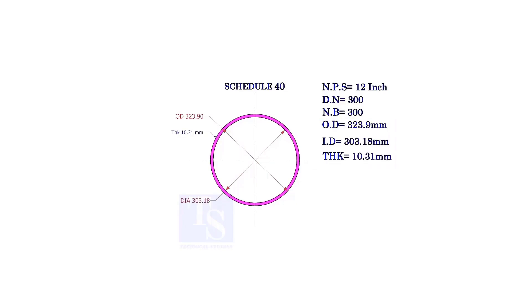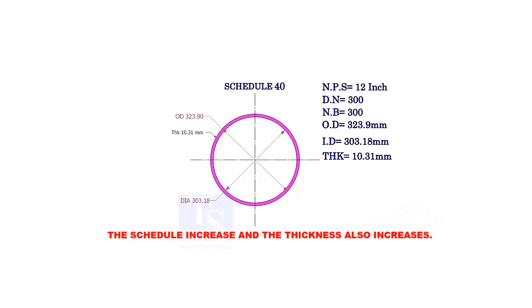Let us check the dimensions of the same size pipe with a higher schedule. As the schedule increases, the OD remains constant, the ID decreases, and the thickness increases.